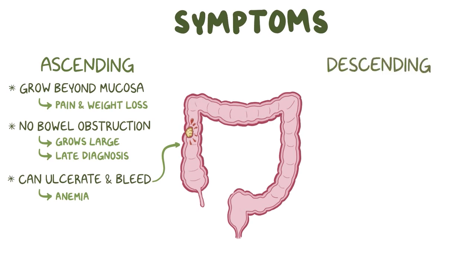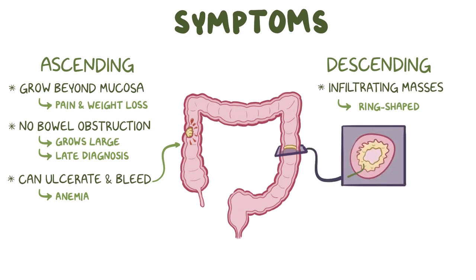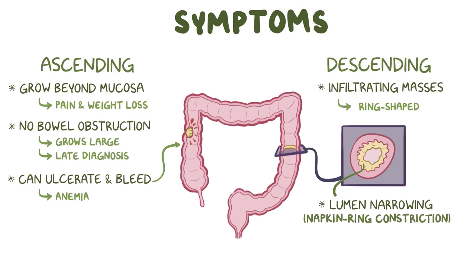Tumors located on the descending or left colon are generally infiltrating masses, meaning that they tend to be ring-shaped masses that involve the whole circumference of the colonic wall. This causes lumen narrowing, referred to as napkin ring constriction, so symptoms of bowel obstruction typically happen early on. Bowel obstruction can cause colicky abdominal pain and blood-streaked stools, called hematochezia.